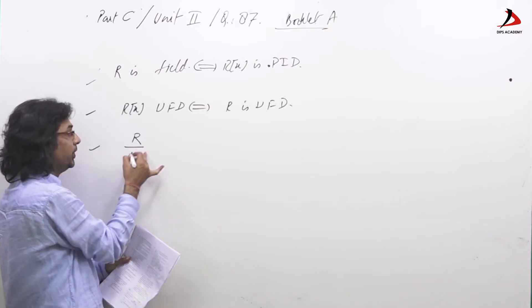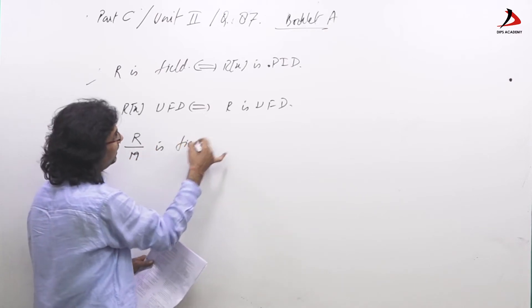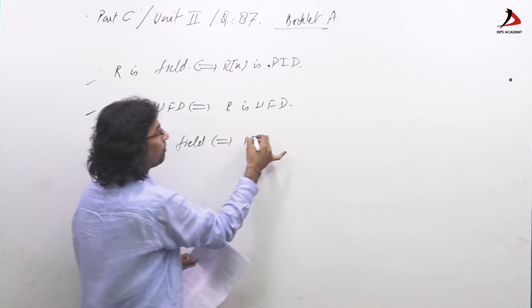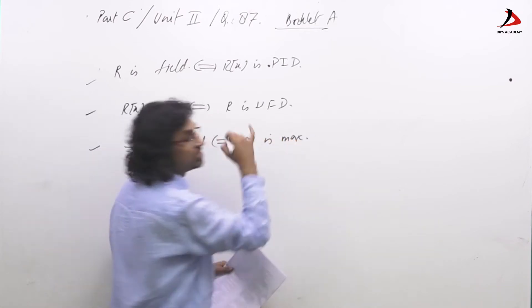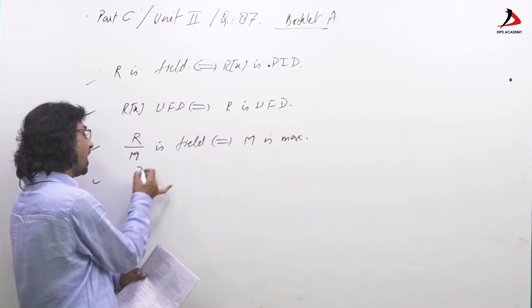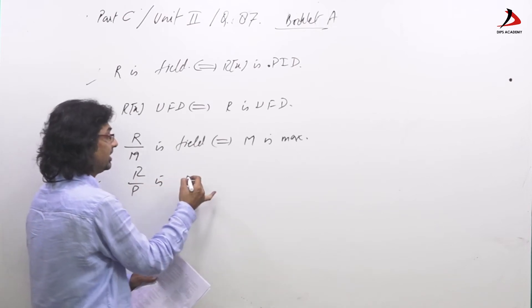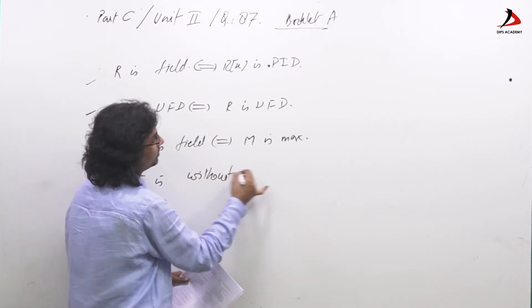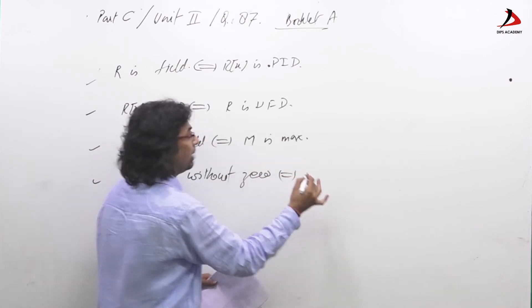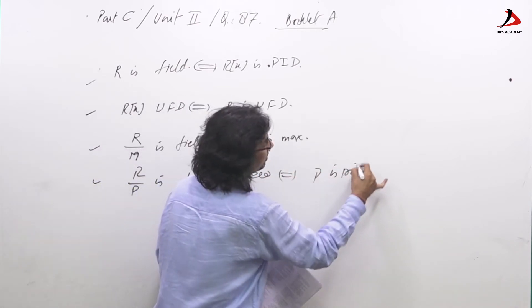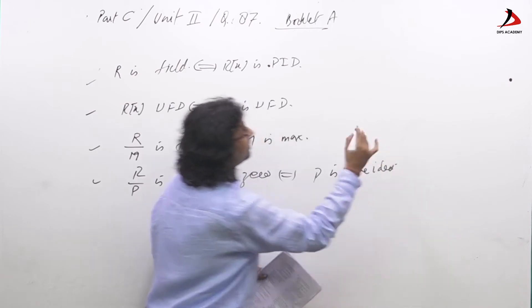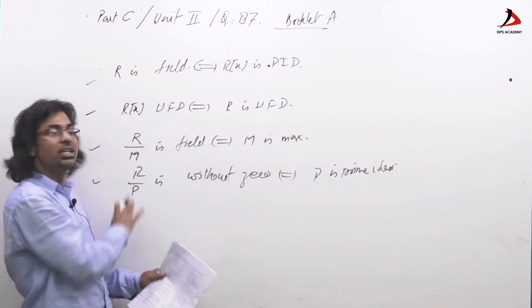And third, R is CRU, then R/M is field implies M is maximal, and if R/P is without zero divisor implies P is prime ideal. So these four results are important.